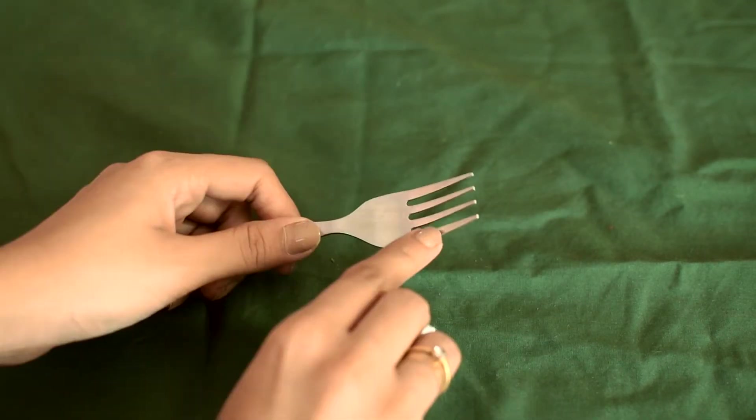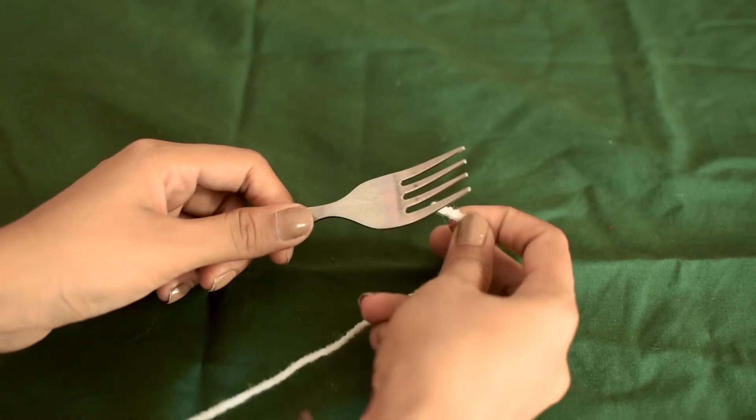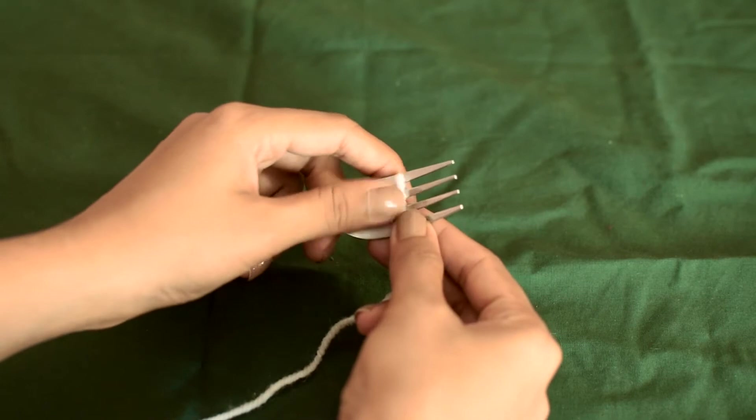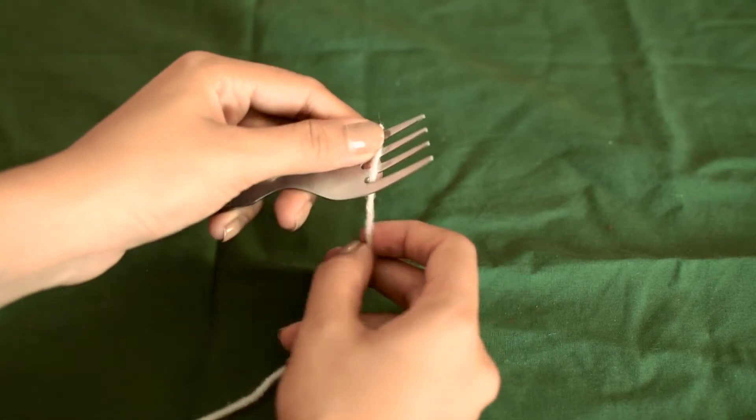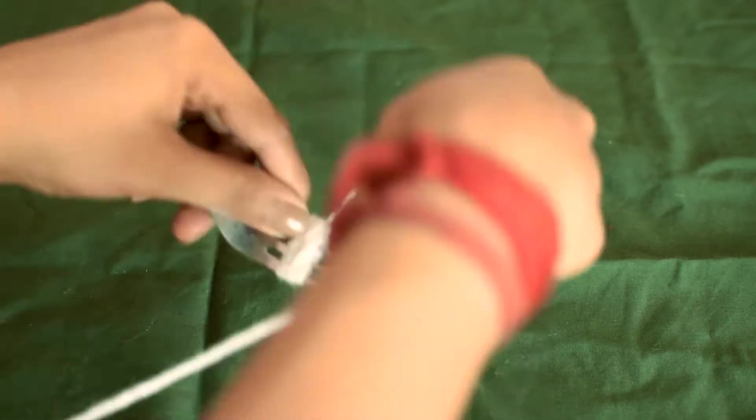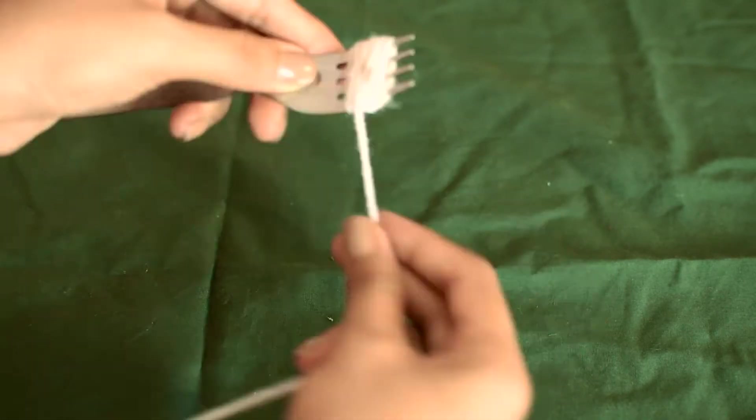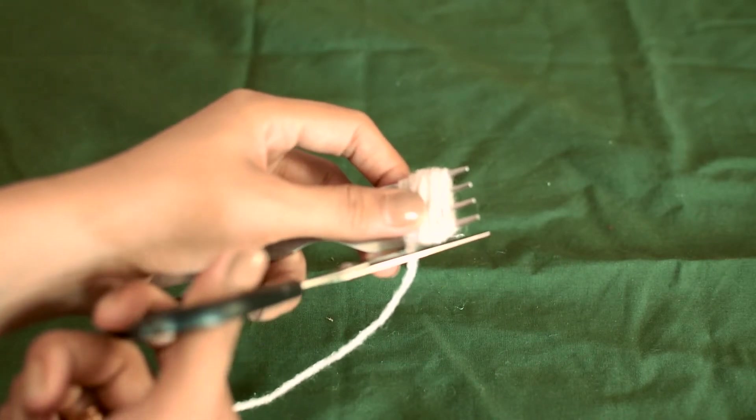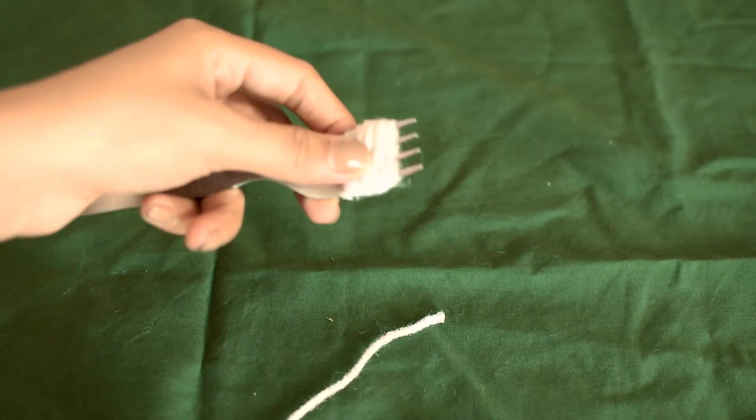Now let's get started. Taking your fork, insert your chosen yarn through the third prong or the middle prong so that you have better grip when you're looping it around the fork. Just loop it as many times as you want. Remember, the more you loop, the fluffier or more full your pom-pom is going to be.